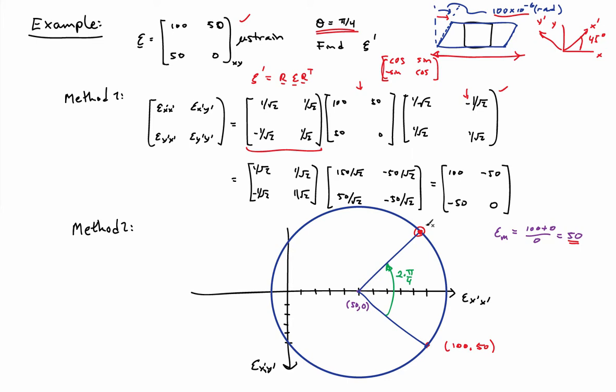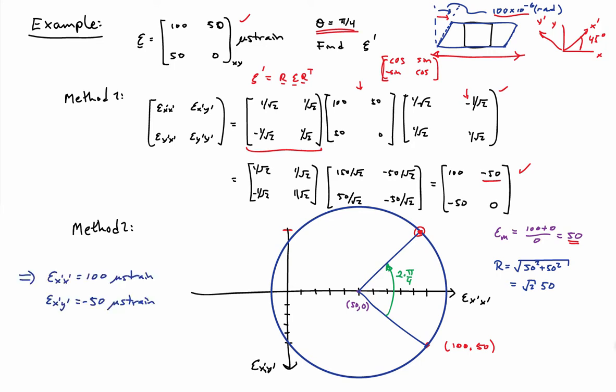Reading off from the diagram, the normal strain in the X prime direction is also 100 microstrain — which checks with the rotation matrix result. The X prime, Y prime shear strain is negative 50 microstrain, which also checks. You can do this analytically from the circle by calculating its radius, which is root 2 times 50 microstrain, and that leads to the exact same result of 100 microstrain in X prime and minus 50 microstrain in X prime, Y prime.